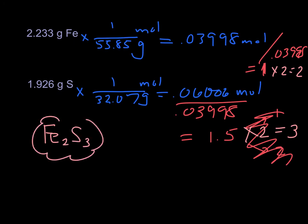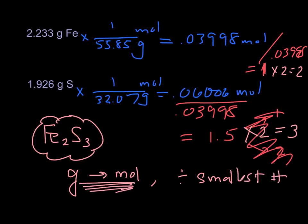And we'll do some more examples where you have to do a little extra there at the end. But that's basically how to find empirical formula. Change grams to moles, and then divide by the smallest number. That's all there is to it. The trick is, don't forget to change grams to moles first.